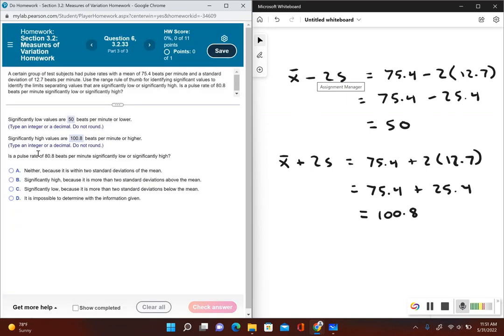Now it's asking us if a pulse rate of 80.8 beats per minute is significantly low or significantly high. Well, since 80.8 is not lower than 50 and it's not higher than 100.8, 80.8 is not significant at all. So this would be neither, because it is within two standard deviations of the mean.